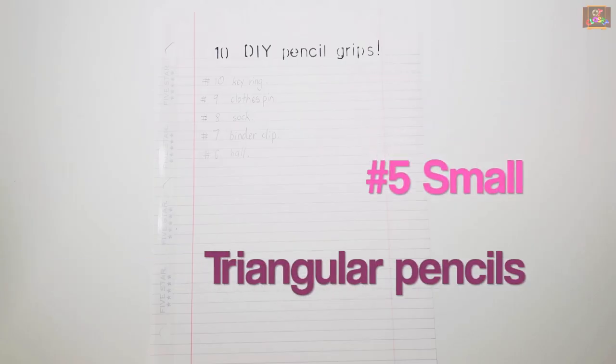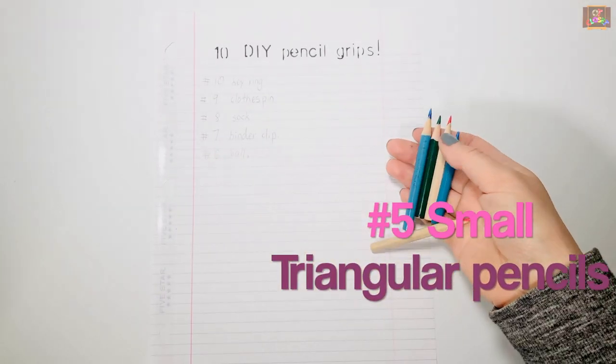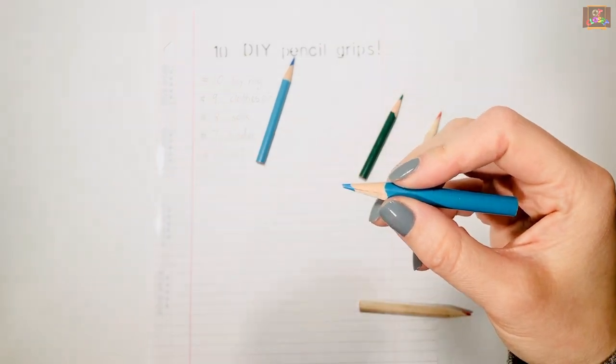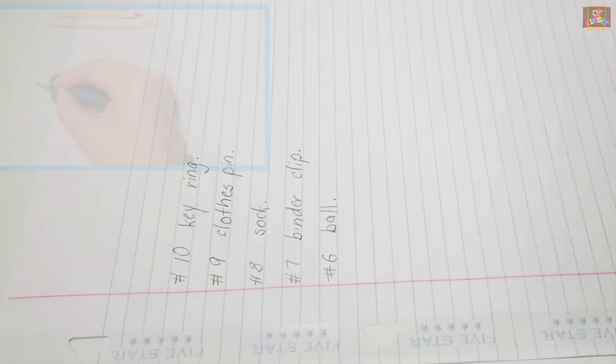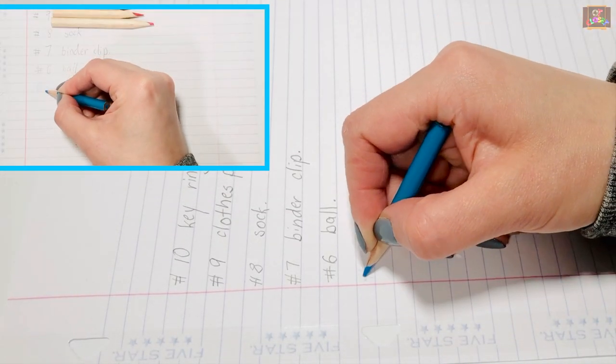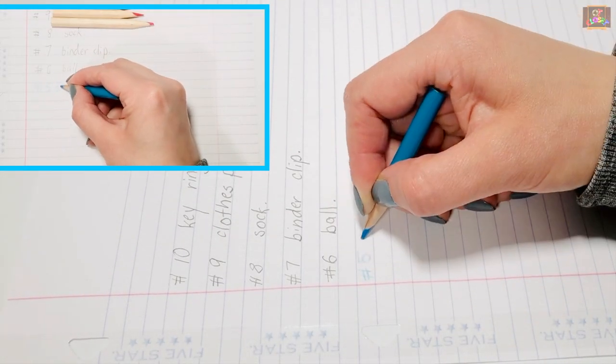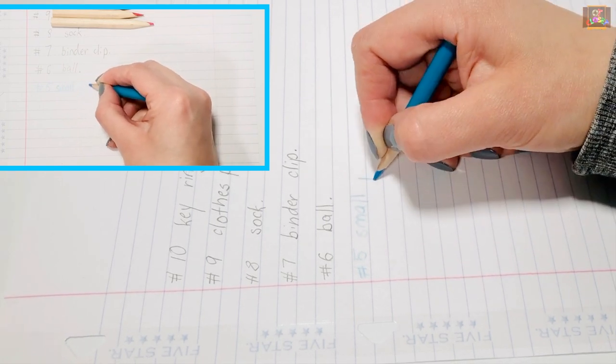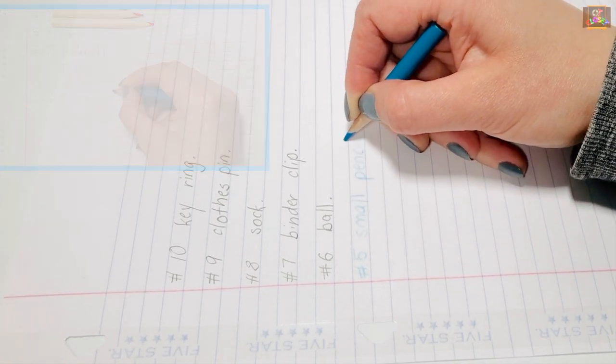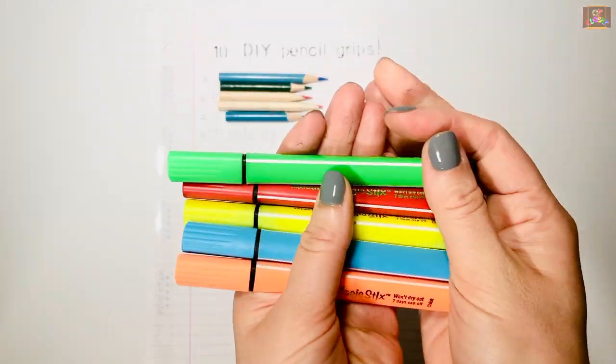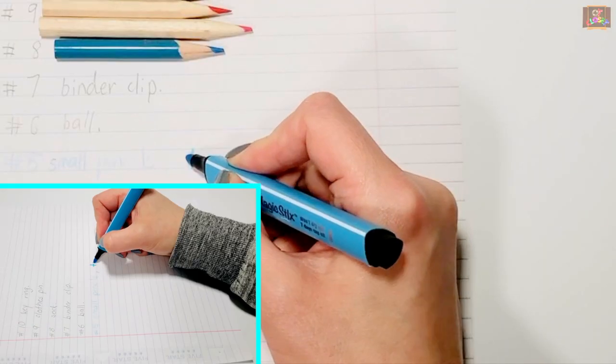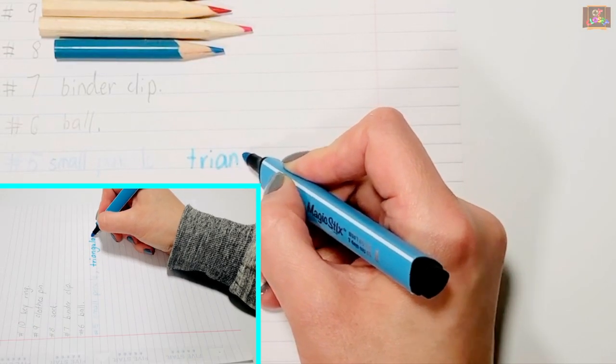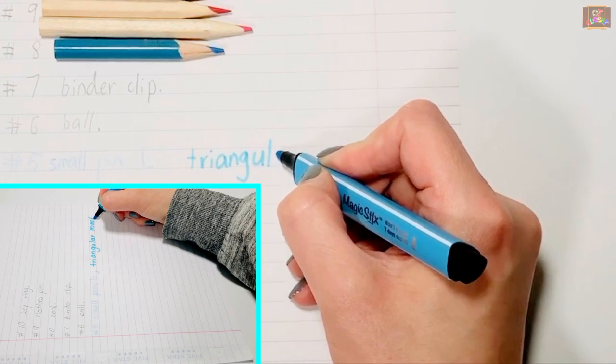Number 5: Small or Triangular Pencils. Due to the length of the pencil, it forces the kids to use the tips of the fingers on the pencil and stops them from using a gross grasp. The three flat sides of the markers make it a perfect match for a mature grasp.